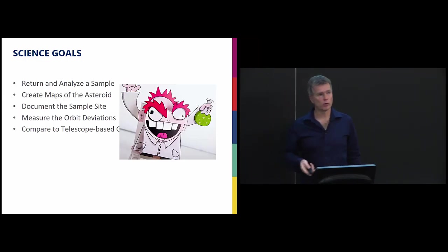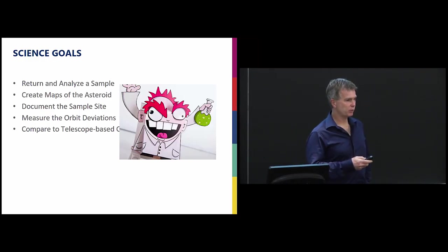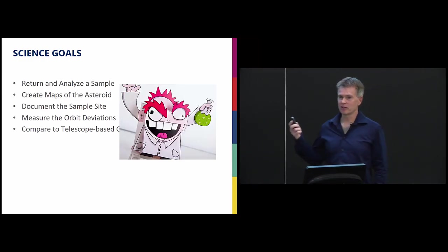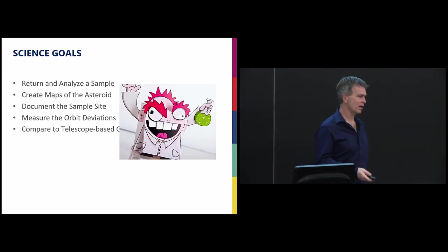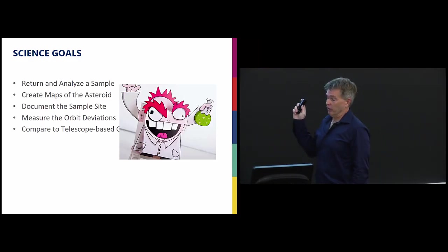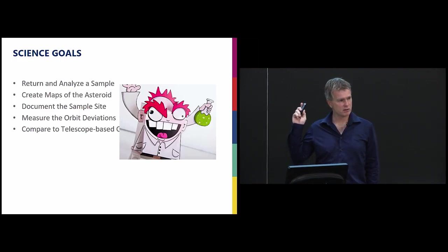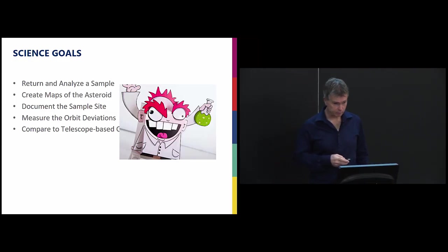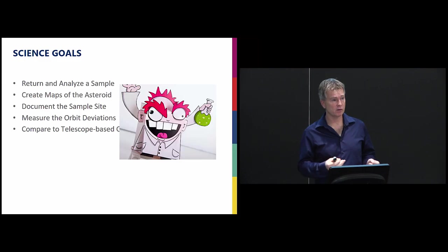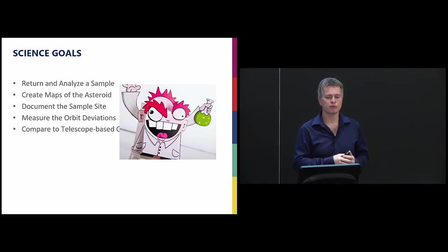So what are the science goals? Our number one thing that we want to do here is we want to go out and grab a sample from the asteroid and bring it back. Because even though these instruments on the spacecraft are very capable, they're not as capable as instruments we can have in the laboratory. If we dropped all goals of the mission, this is the one we would prioritize: to bring back a sample, and it's coming back in 2023.